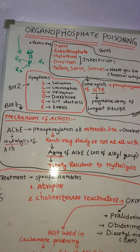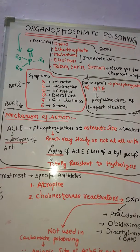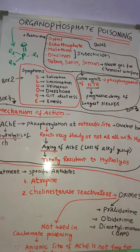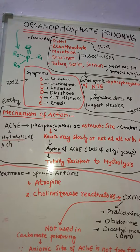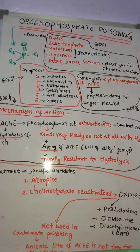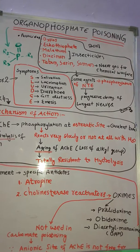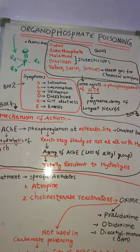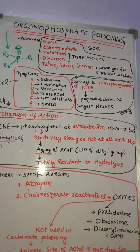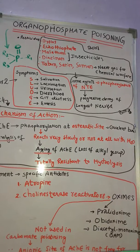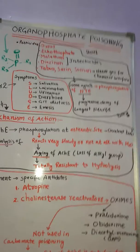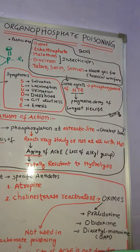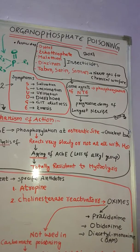The mechanism of action: organophosphates phosphorylate the acetylcholinesterase enzyme at its active site. There is also aging of acetylcholinesterase, meaning there is a loss of some alkyl group, so the enzyme becomes totally resistant to hydrolysis.